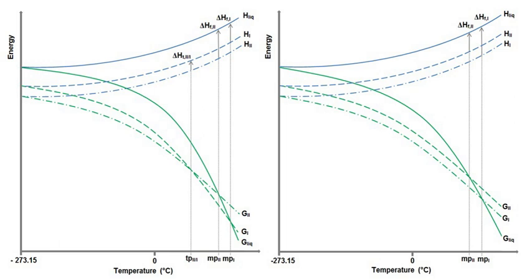For an enantiotropic system, a plot of the free energy against temperature shows a crossing point threshold before the various melting points. It may also be possible to revert interchangeably between the two polymorphs by heating or cooling, or through physical contact with a lower-energy polymorph.